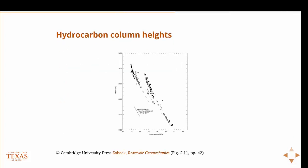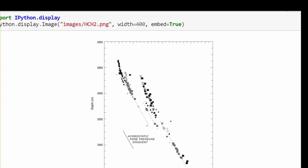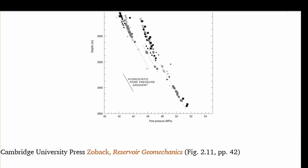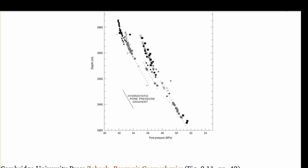This is subtle, but you can actually see this in some pore pressure data. This is pore pressure versus depth data, and for the most part it follows hydrostatic — the dashed lines are hydrostatic. But at the tops, at the highest points, you have these kicks — these little kicks where the data doesn't quite follow hydrostatic. This is due to hydrocarbons being more buoyant than the water on top of the formation.